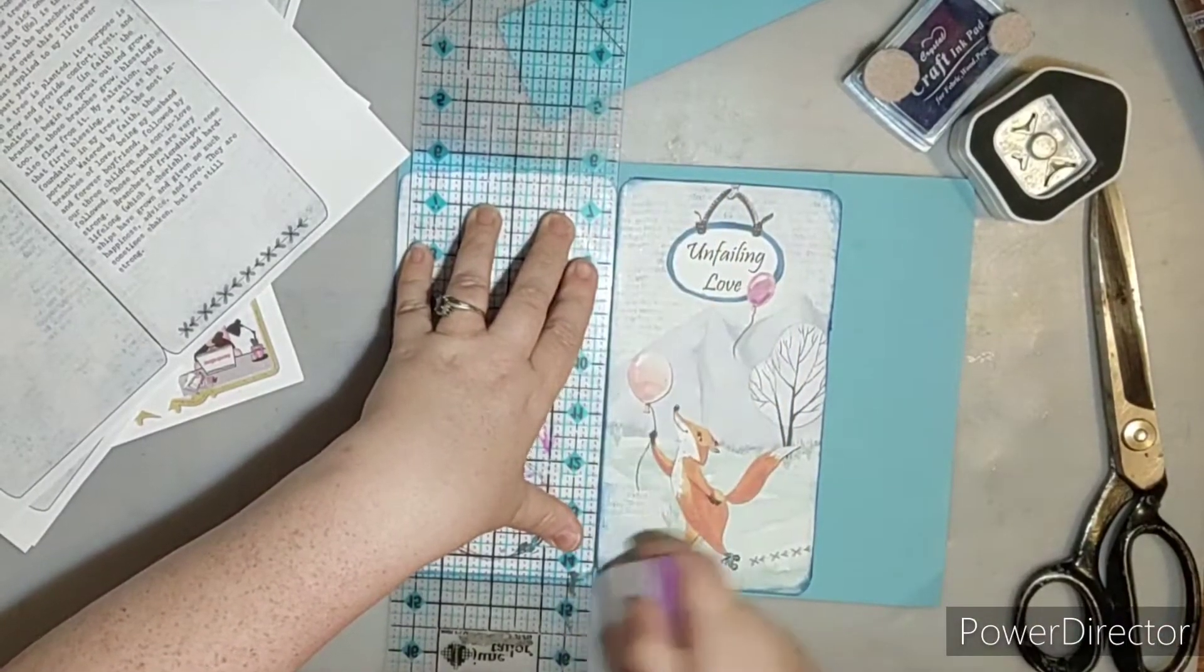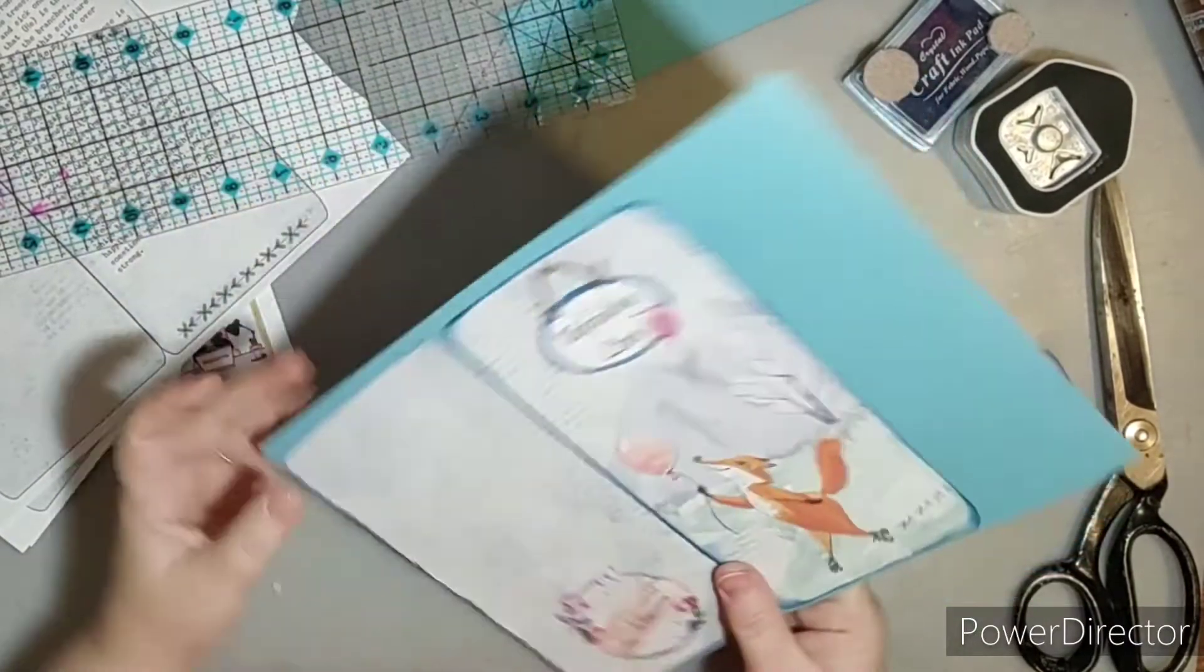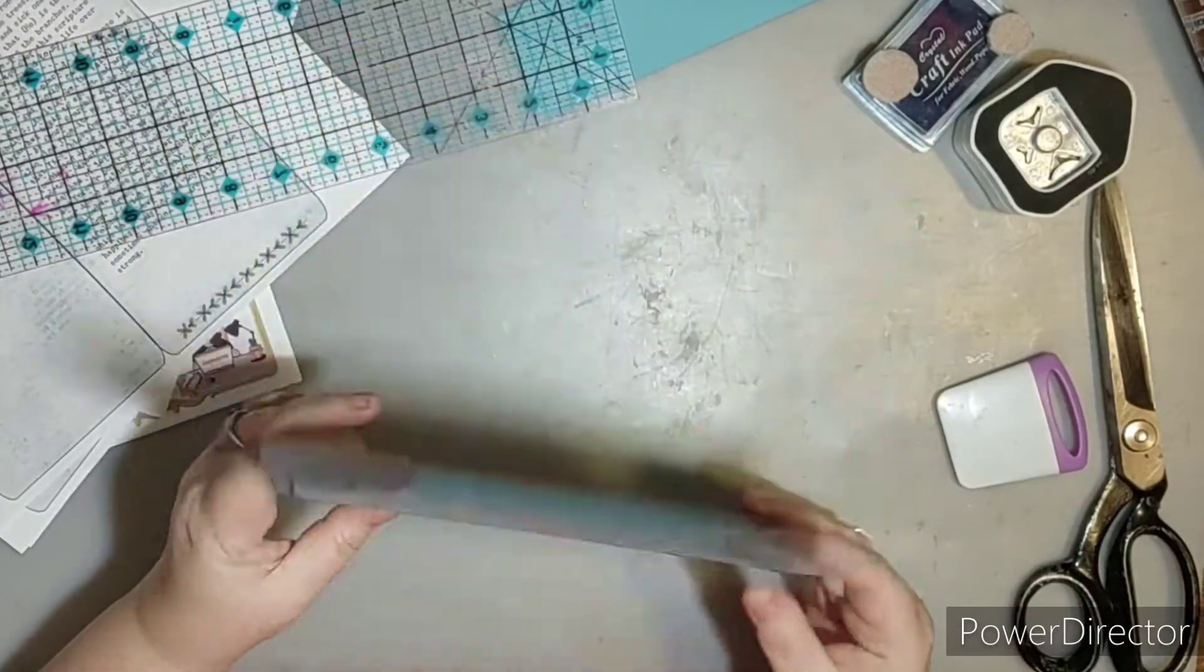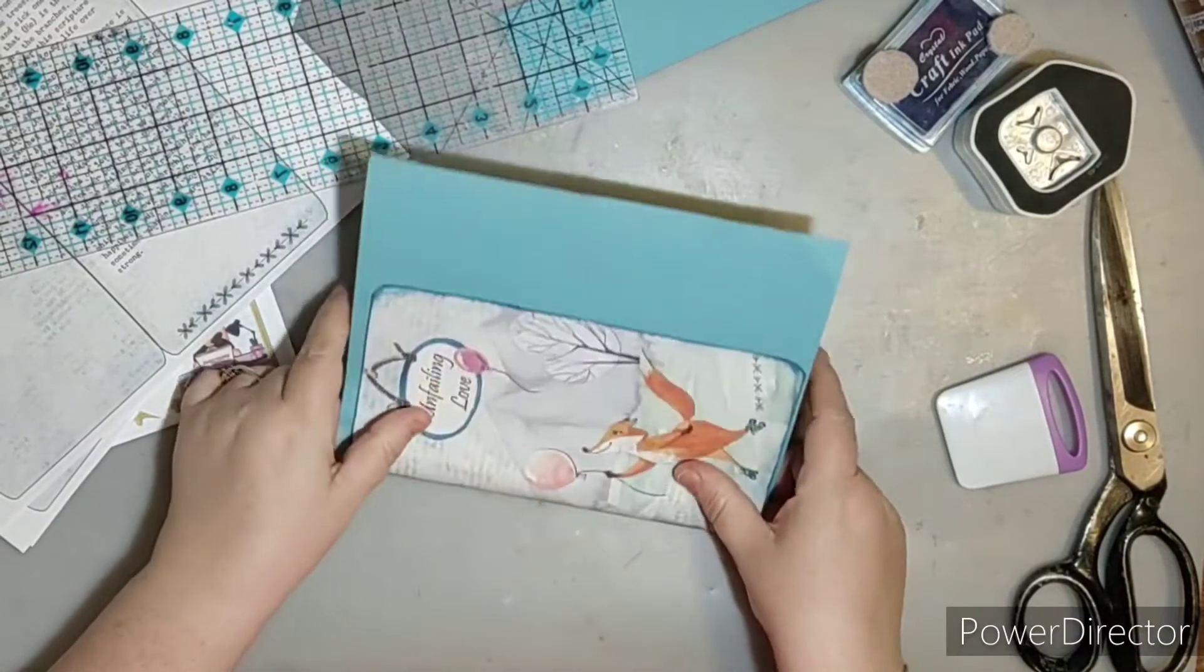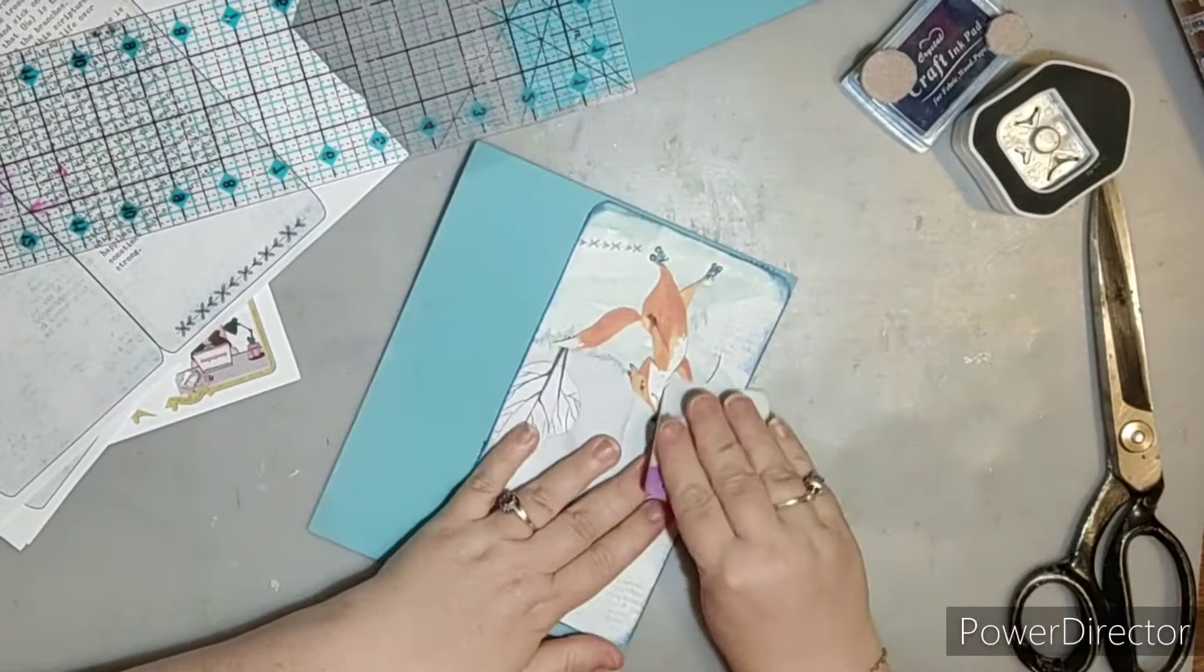I'm going to use different types of scoring tools. This I found at Dollar Tree, it's a scraper but it works really well so I am going to score on the black line and then I am going to score on the right and left side of the black line.